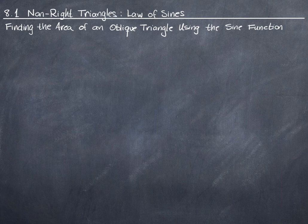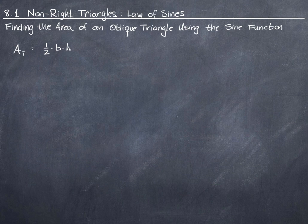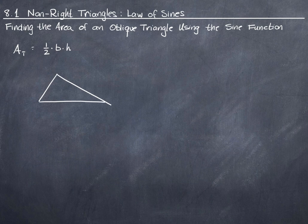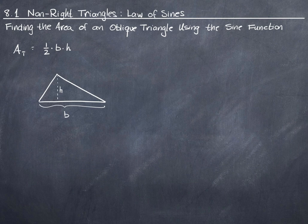You probably remember from high school geometry that the area of a triangle can be found by taking one-half times the base times the height of that triangle. So if we have a triangle and we know the height of that triangle and the length of the base of the triangle, then we can use this formula.